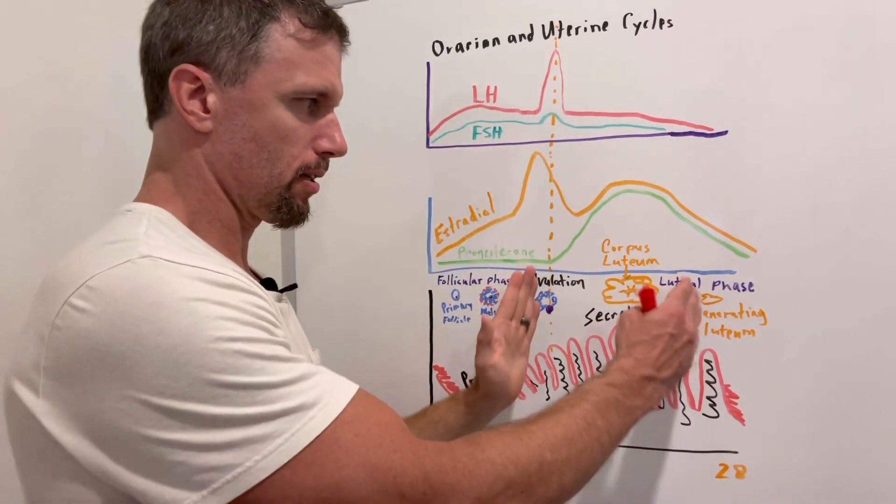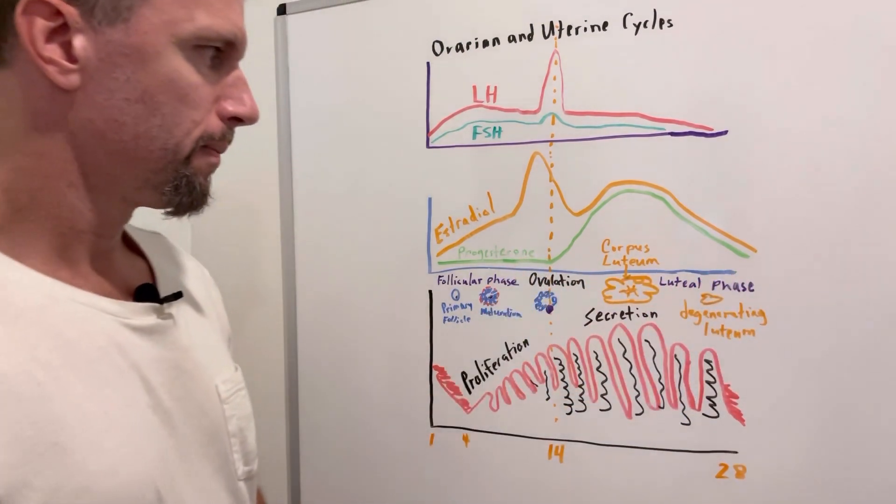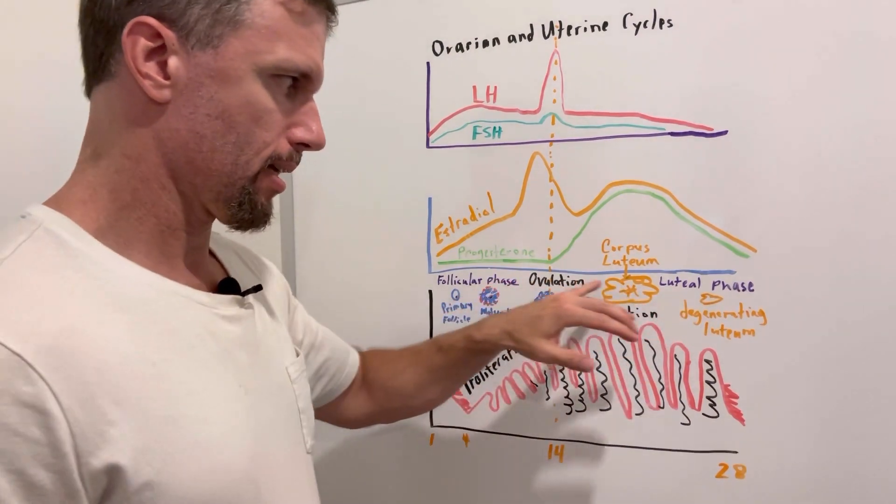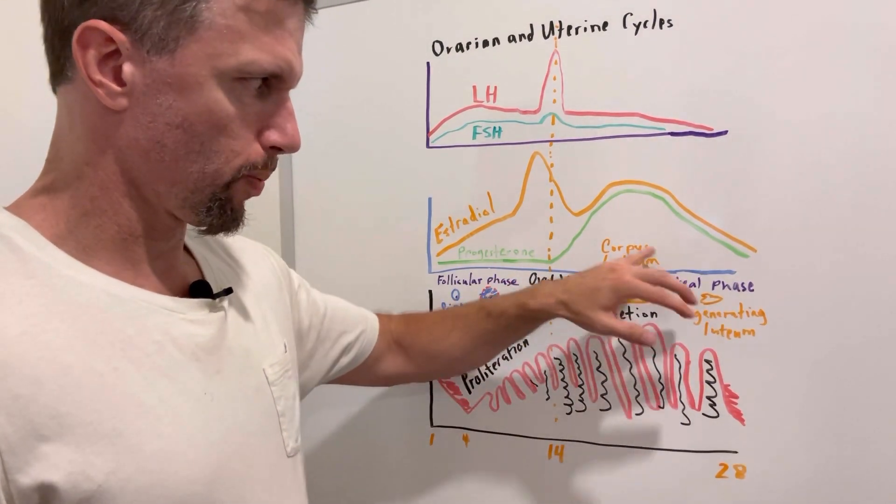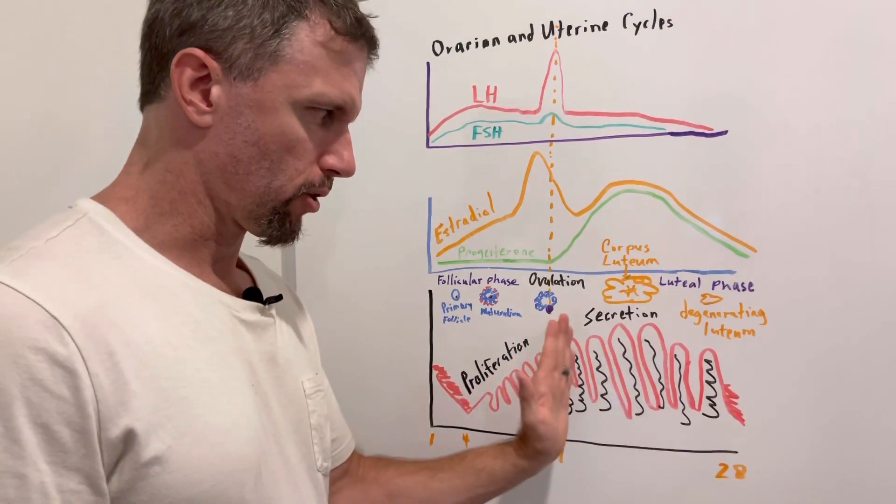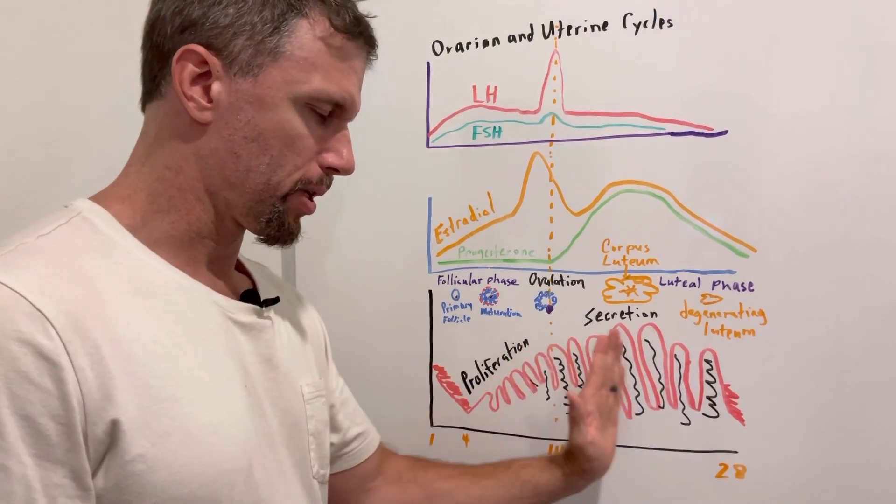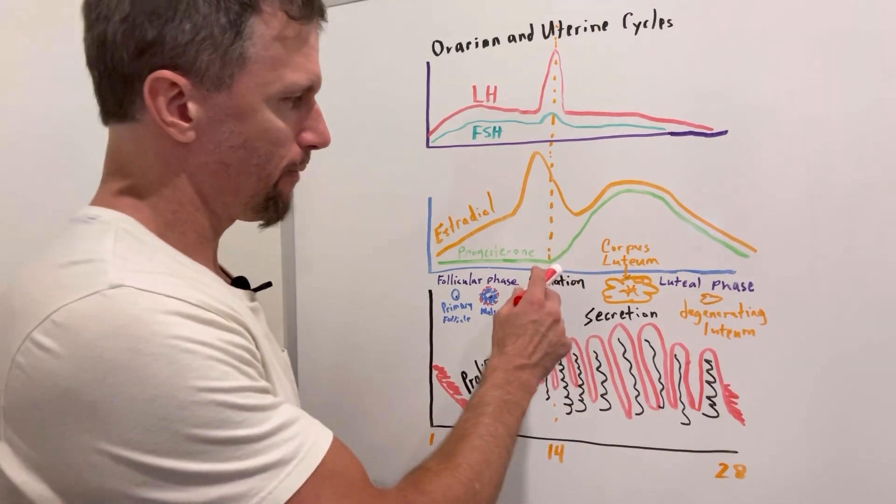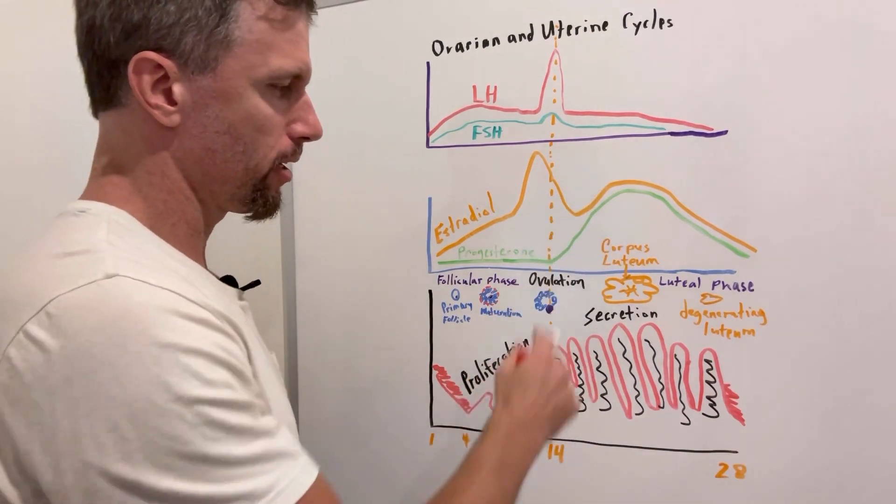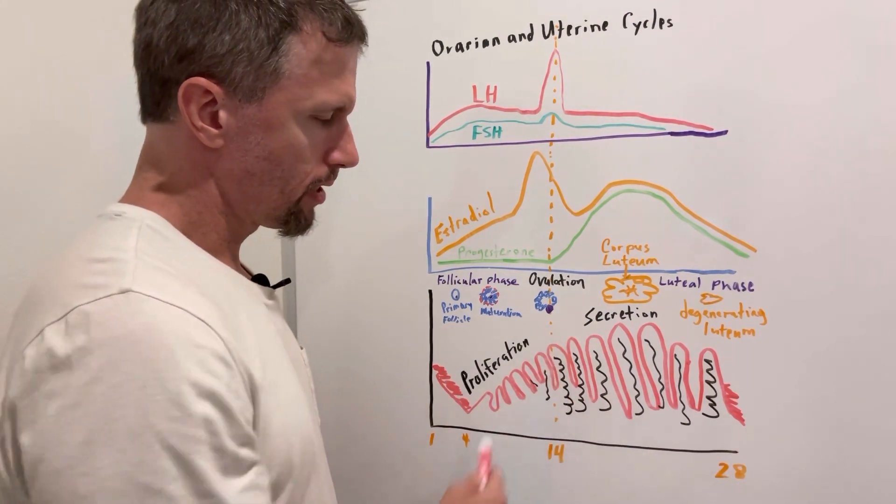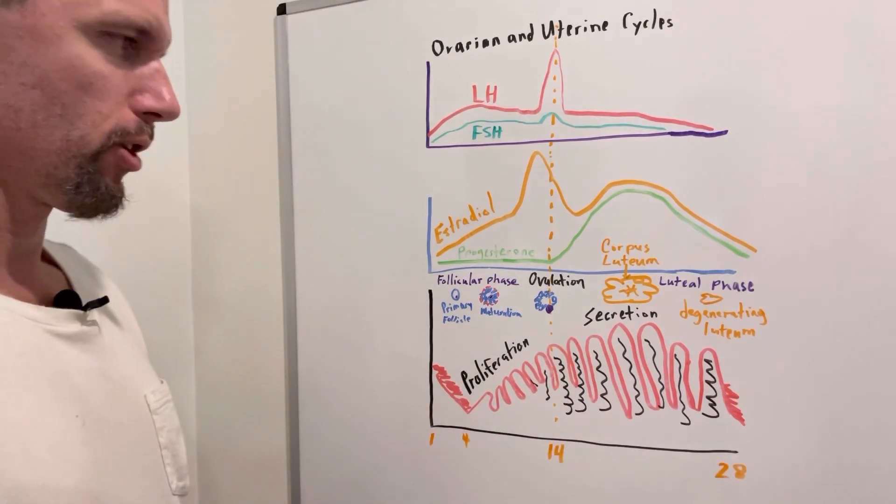And that's during this second phase, the second 14 days. We call it the luteal phase in the ovarian cycle because of the corpus luteum. And then we also call it the secretory phase or secretion phase, the second 14 days in the uterine cycle. And that's because when you have progesterone and estradiol together increasing, you start getting a lot of spiral arteries coming up in here and a lot of secretions.